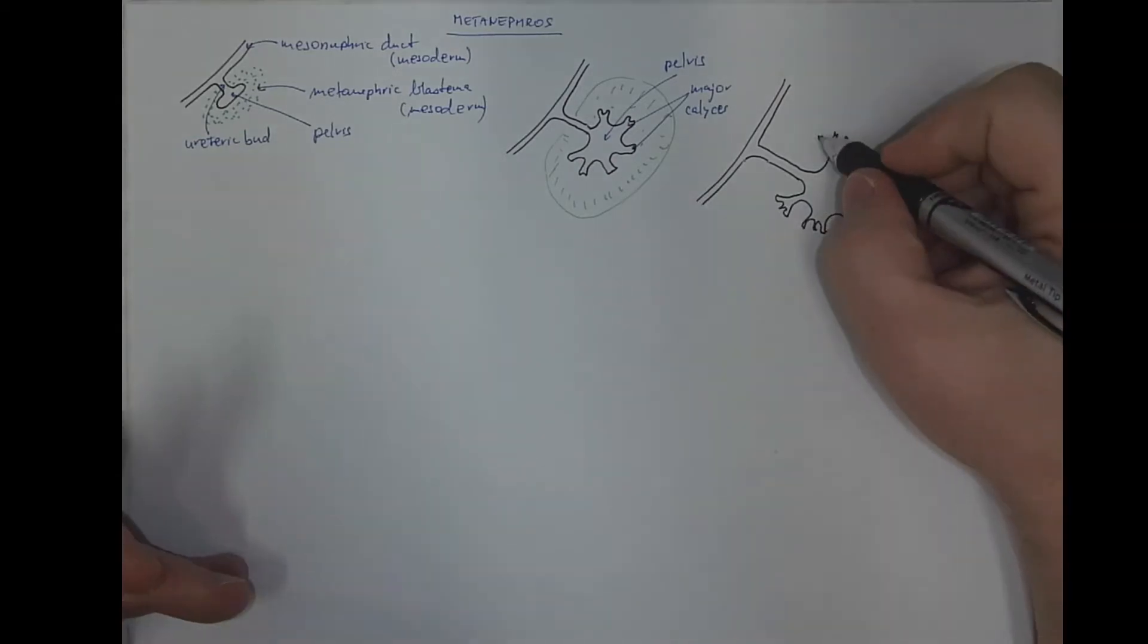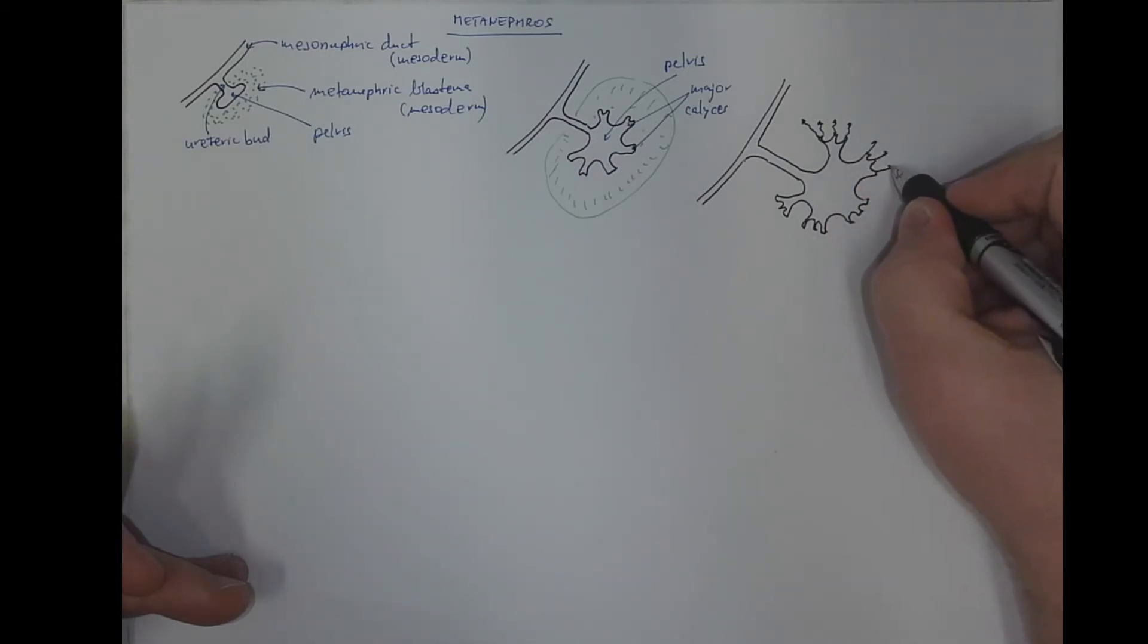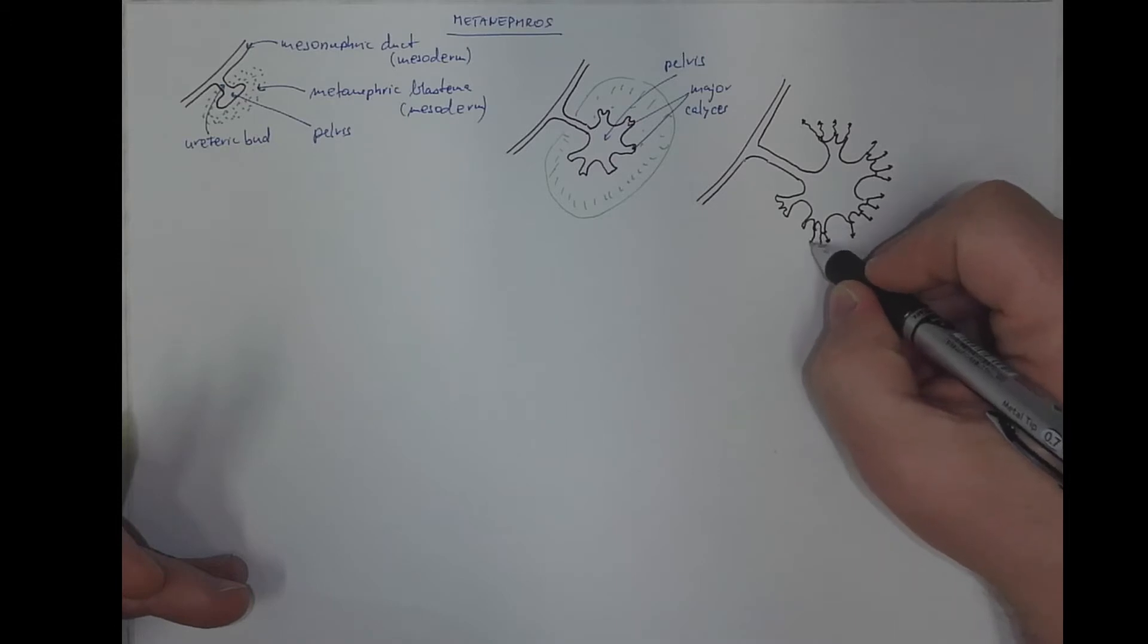Moreover, from the minor calyces, the microscopic tubules are proliferating. These will become the collecting tubules that you already, perhaps, know from the histology of kidney, right?